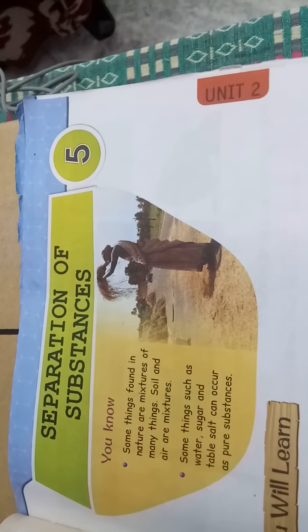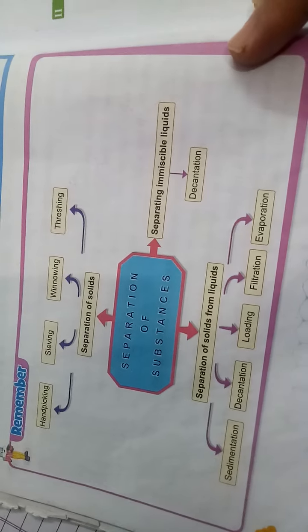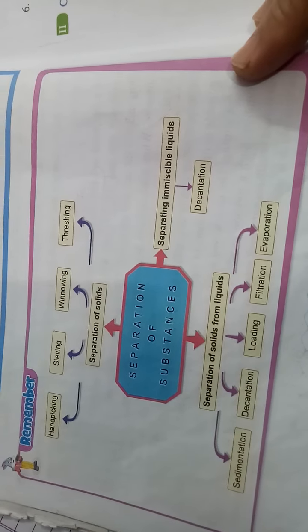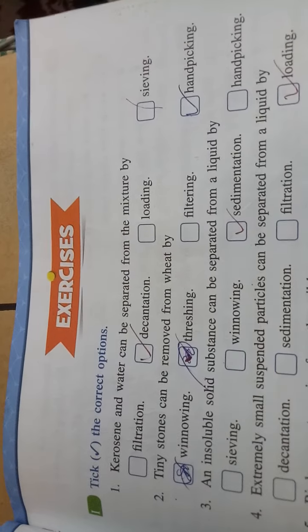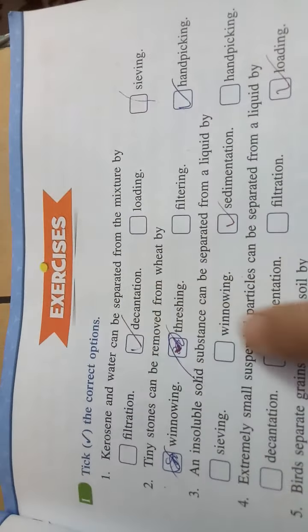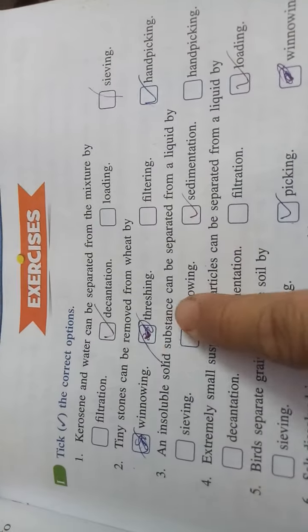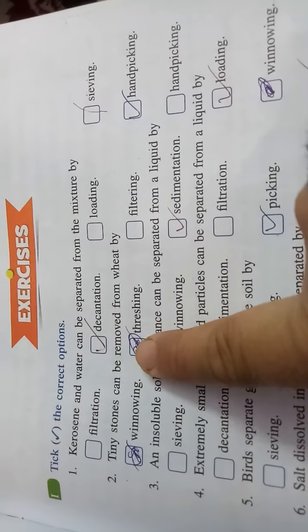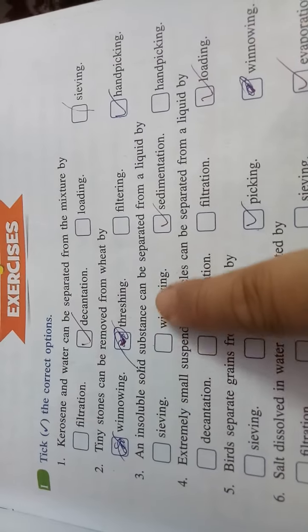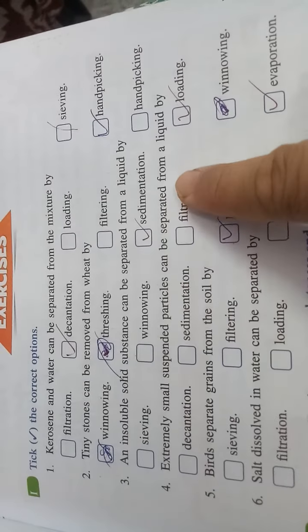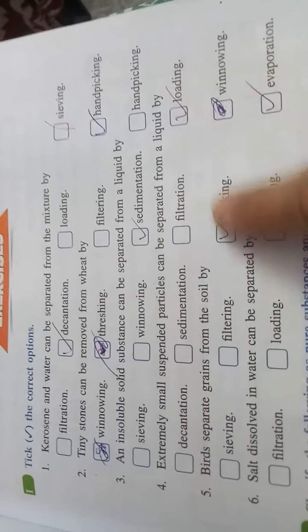Chapter 5: Separation of Substances. Kerosene and water can be separated by decantation. Tiny stones can be removed by hand picking. Substances in a solution can be separated from the liquid by sedimentation. Extremely small suspended particles can be separated by filtration.